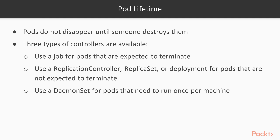There are three types of controllers available. A Job — a job expects the pod to terminate; it's a short-lived pod that does a task, like running a script or a single backup. Replication controllers, replica sets, and deployments are for pods that are not expected to terminate — those can delete pods when needed. And a DaemonSet ensures that pod will run one per machine.